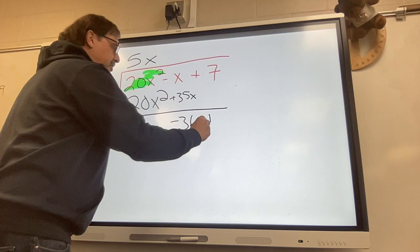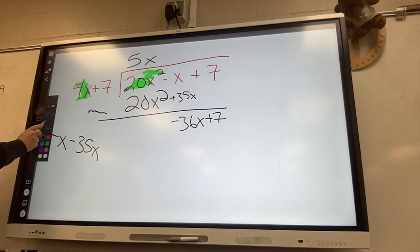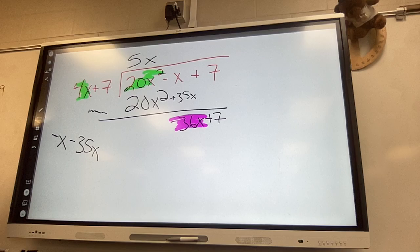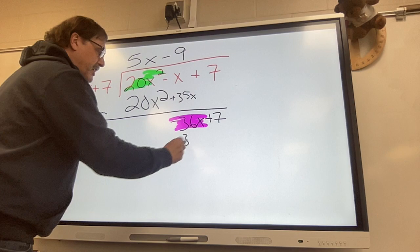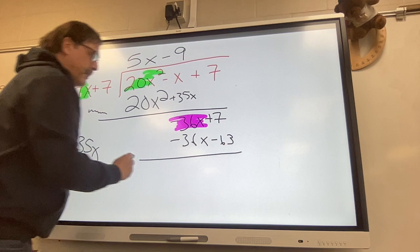Now I'm trying to get the 4x to multiply what multiplies to be negative 36x and that would be 4 times negative 9. Negative 9 over 4 is negative 36x. Negative 9 times 7 is negative 63. Write the word minus.